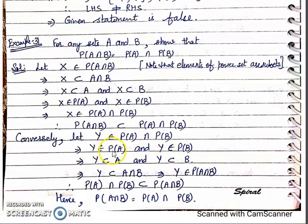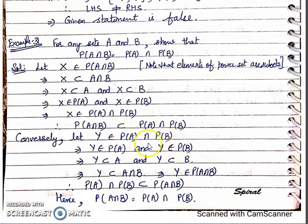As Y belongs to P(A), it means Y is a subset of A. And Y belongs to P(B) means Y is a subset of B. When Y is a subset of both A and B, then Y is a subset of A∩B. So this implies Y belongs to P(A∩B). Therefore every element of P(A)∩P(B) is an element of P(A∩B), so it is a subset. From statements 1 and 2, we get P(A∩B) = P(A)∩P(B).